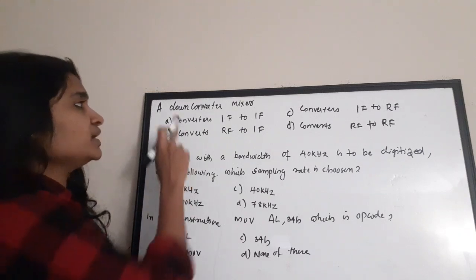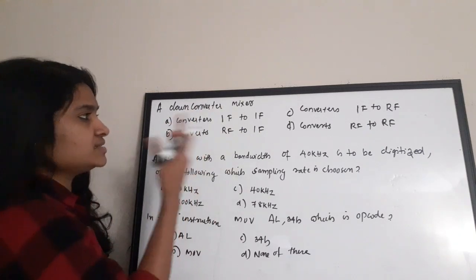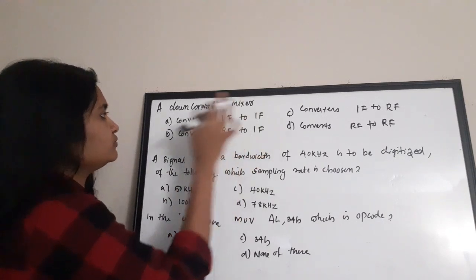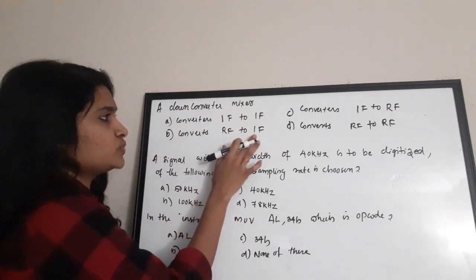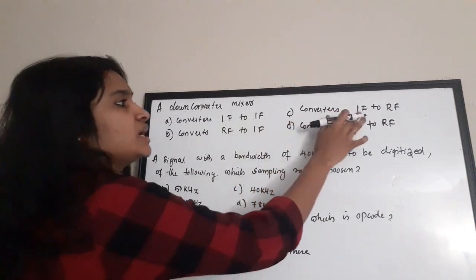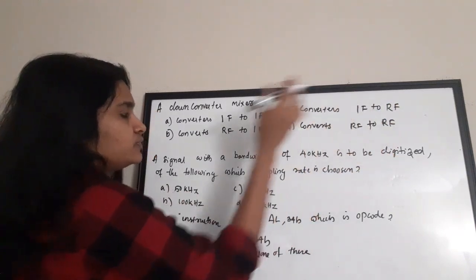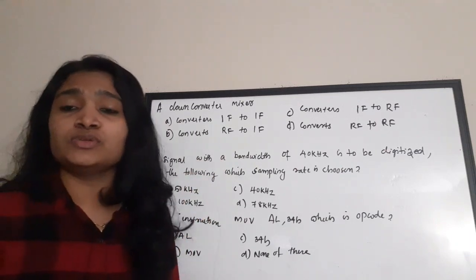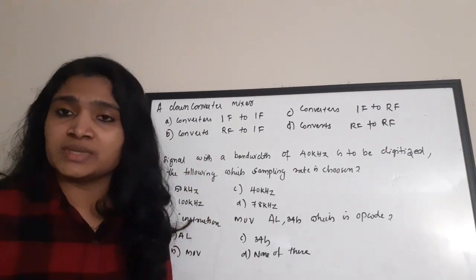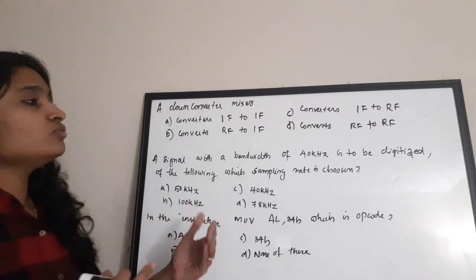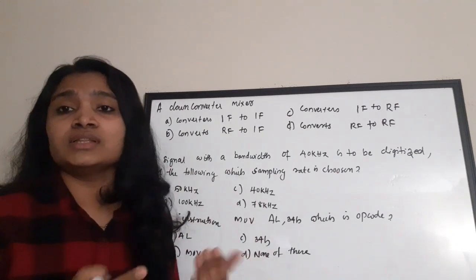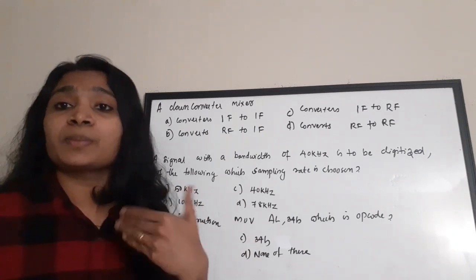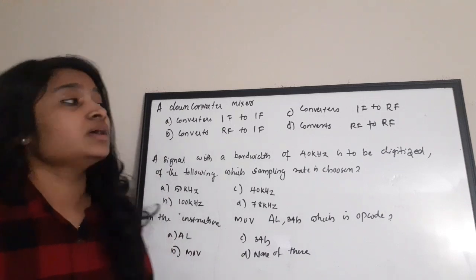Next question: a down-converter mixer — what is its function? Options: a) converts IF to IF, b) converts RF to IF, c) converts IF to RF, d) converts RF to RF. We know that to send a signal, we convert from lower to higher frequency; while receiving, we convert higher frequency back to lower frequency — achieved using up-converters and down-converters.